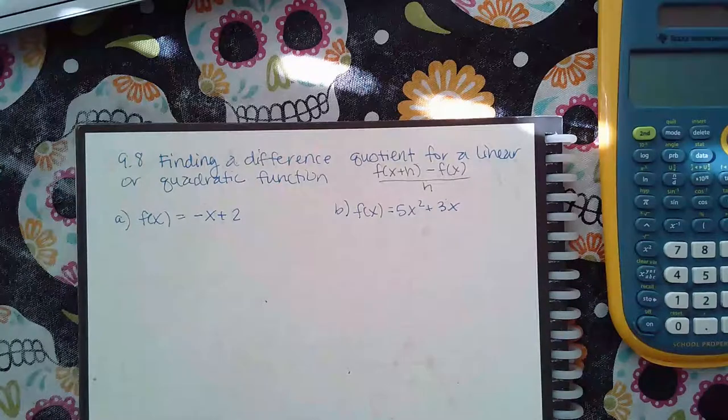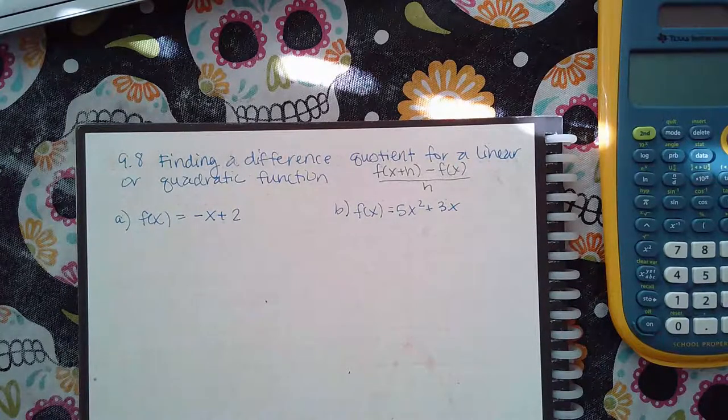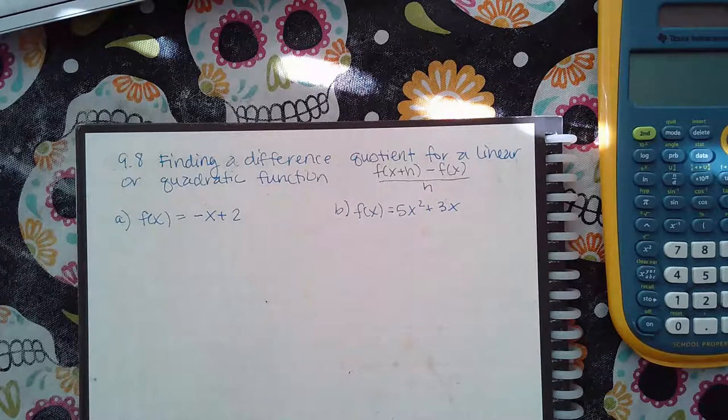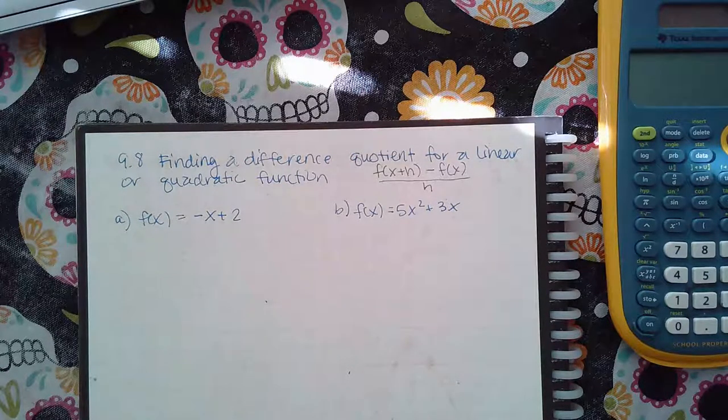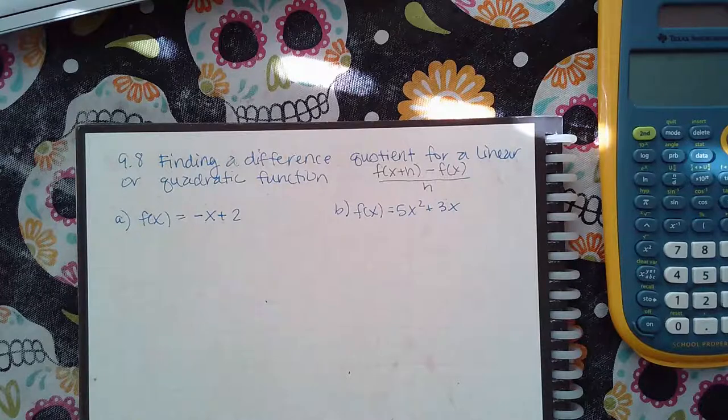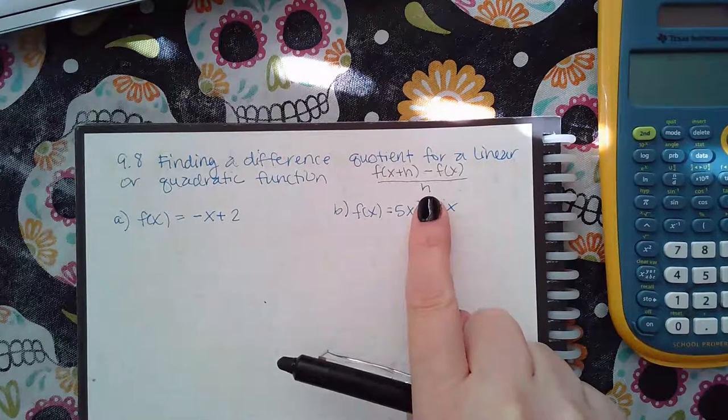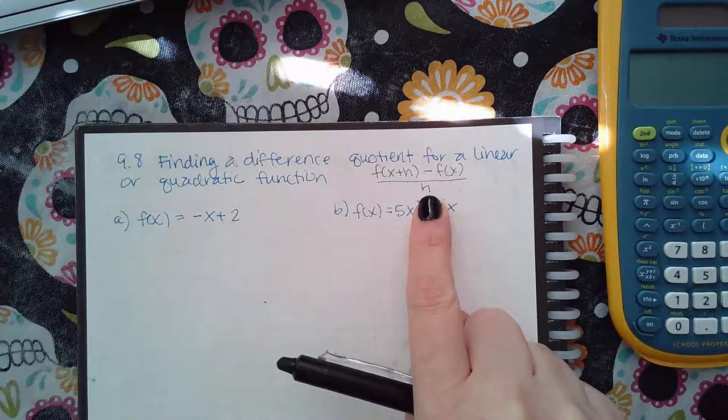And the idea here is to one, figure out what this expression looks like, and then two, to simplify this expression. And you're only finished simplifying once you have been able to cancel this factor h in the denominator.